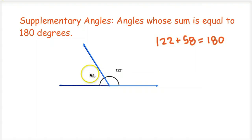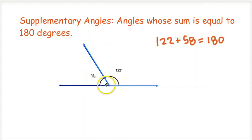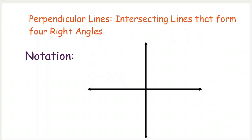We'll probably have some examples in class where you'll be using algebra to find the missing angle. They might say this angle is 122 degrees and find this 4x, and say together they're supplementary. So you'd say 4x plus 122 equals 180 and solve for that. But we'll do that in class.